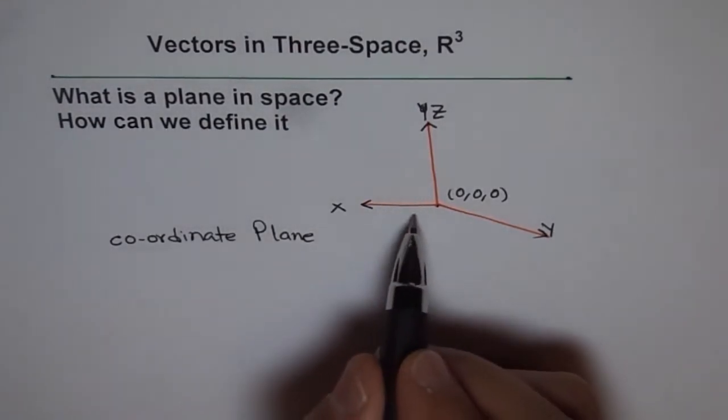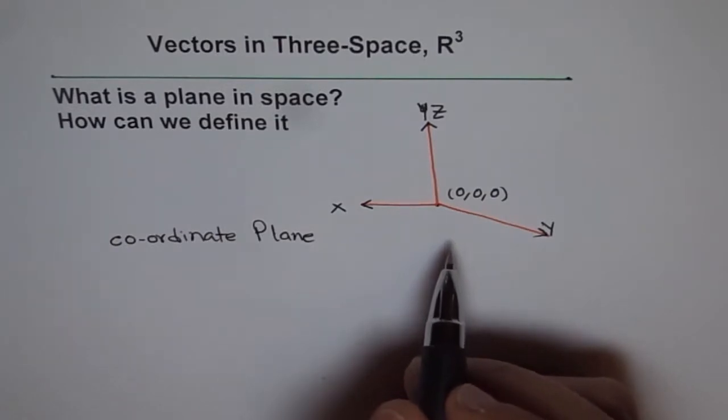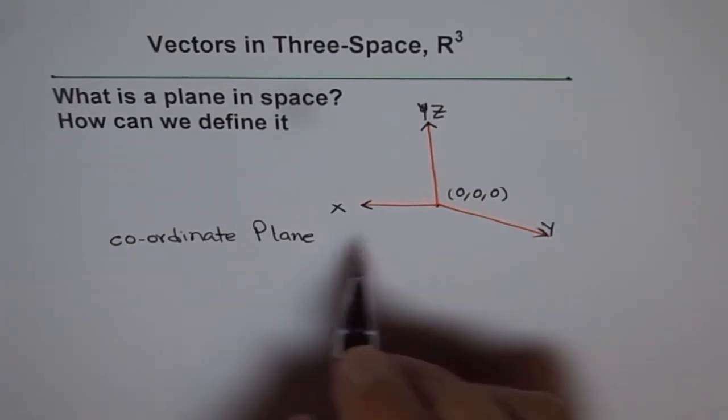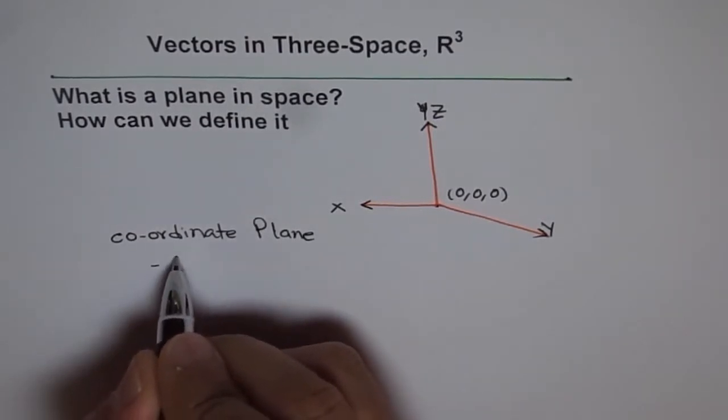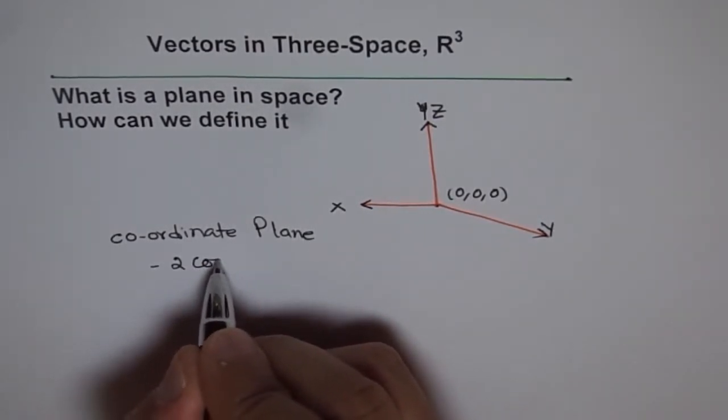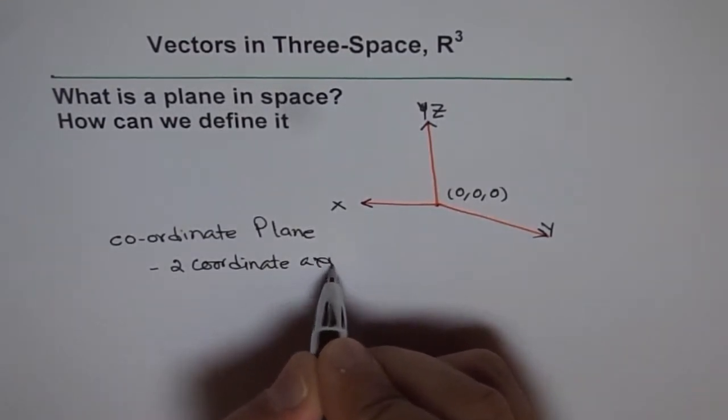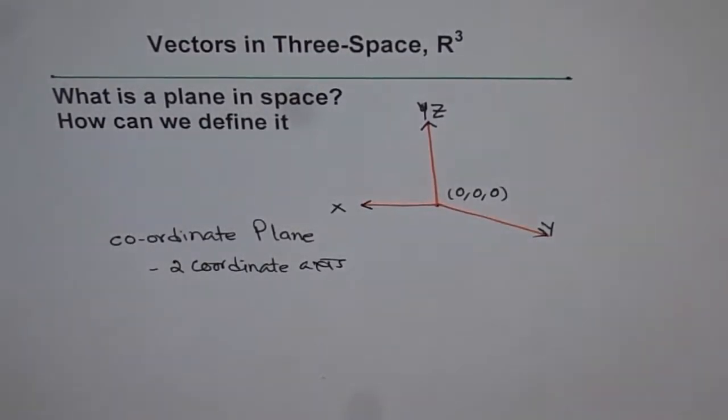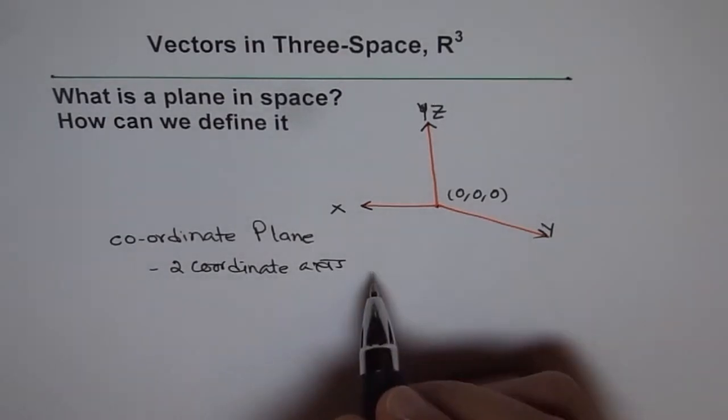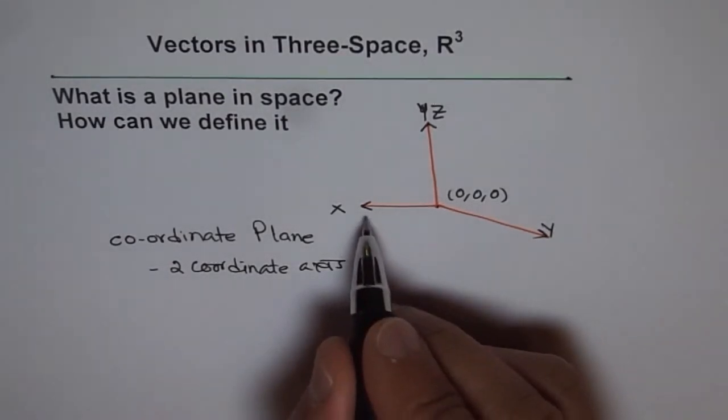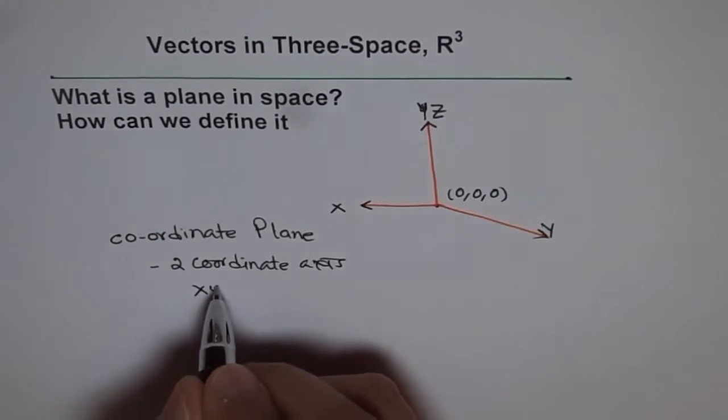Since one is X, Y, we are saying a plane in space that contains two of the coordinate axes. So coordinate planes have two coordinate axes. That is basic. Any two coordinate axes means we'll have three combinations. One is X, Y plane.